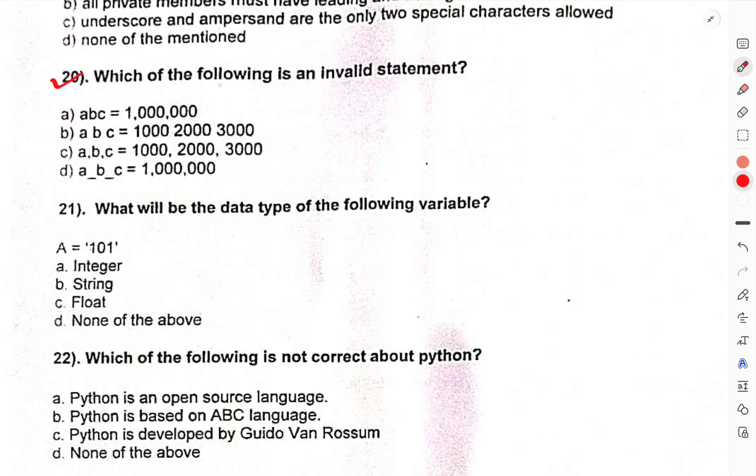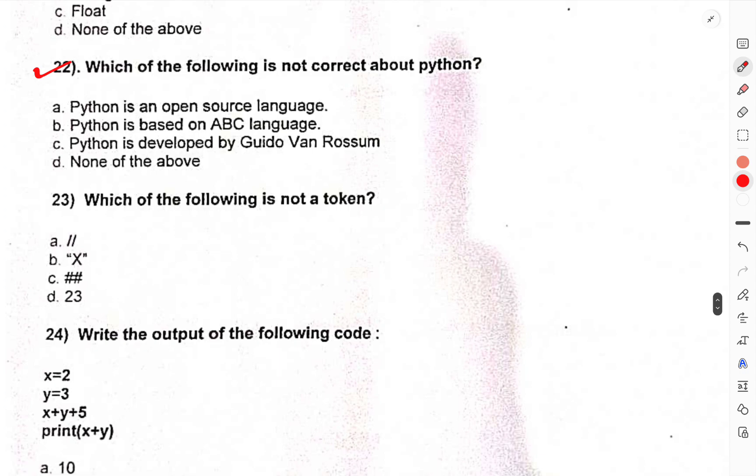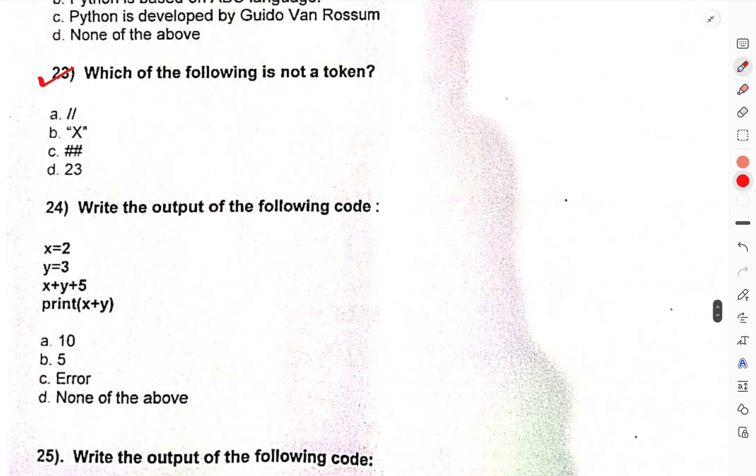Which of the following is an invalid statement? What will be the data type of the following variable? Which of the following is not correct about Python? Which of the following is not a token?